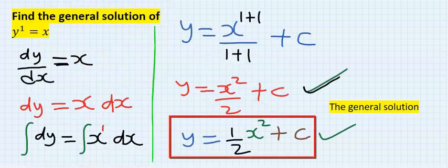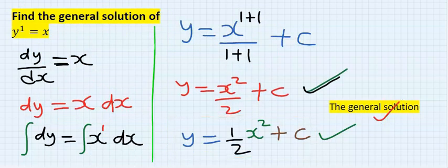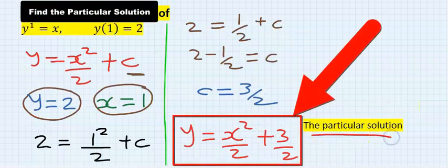In this problem we obtained the general solution, and here we obtain the particular solution by replacing this c with its value.